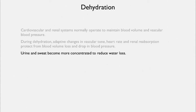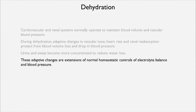If you are losing a tremendous amount of water through sweat, you will hardly urinate at all. There is a careful regulation between the amount of water going out through the skin and the amount going out through urine. These adaptive changes are extensions of normal homeostatic control of electrolyte balance and blood pressure.